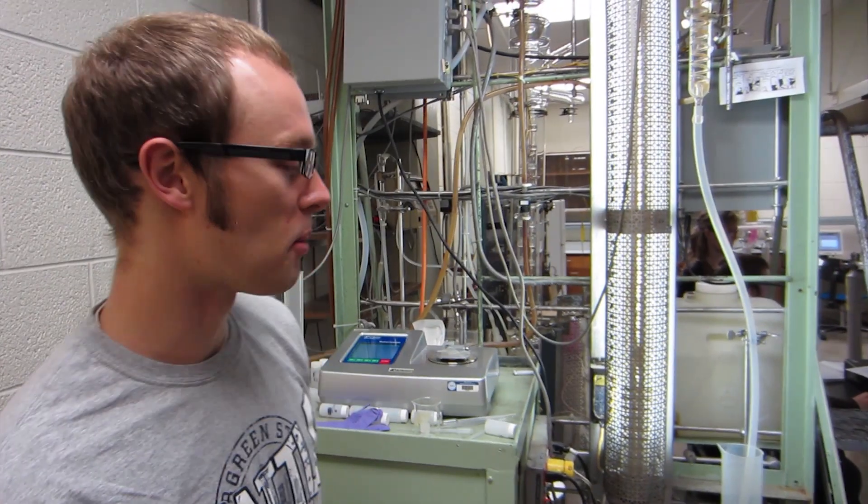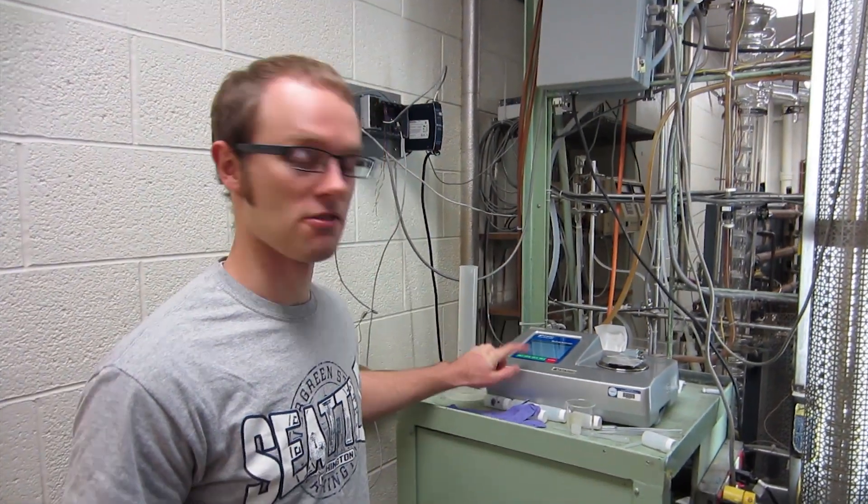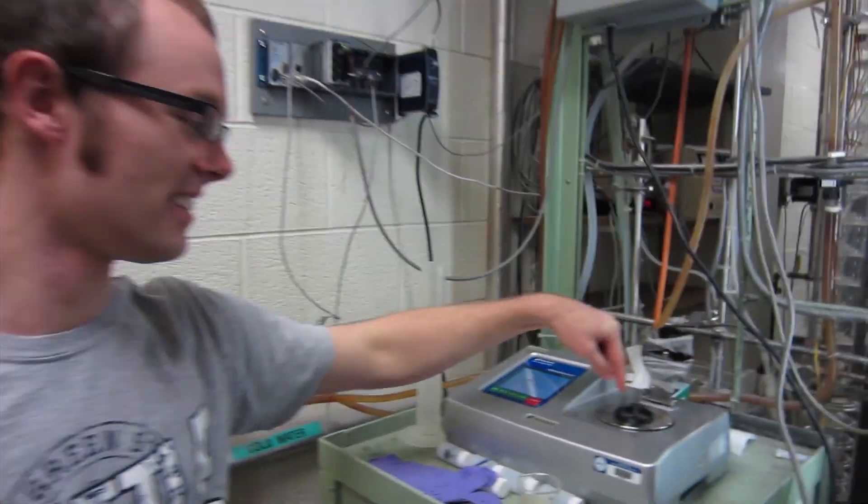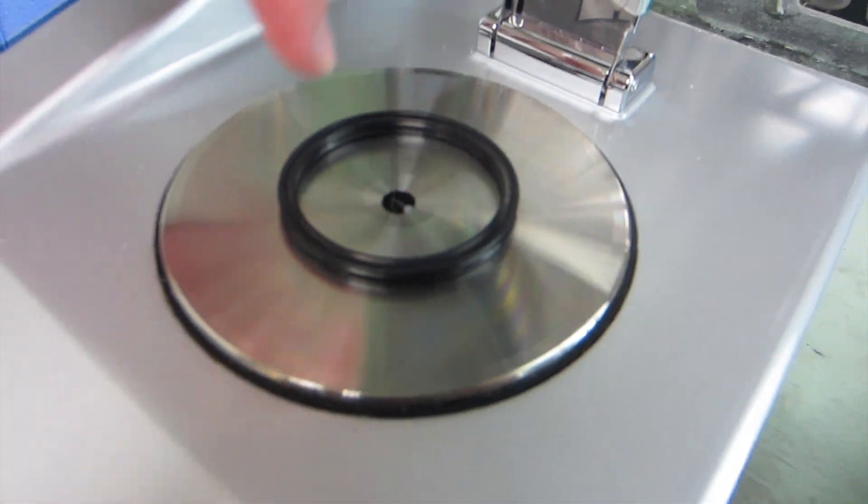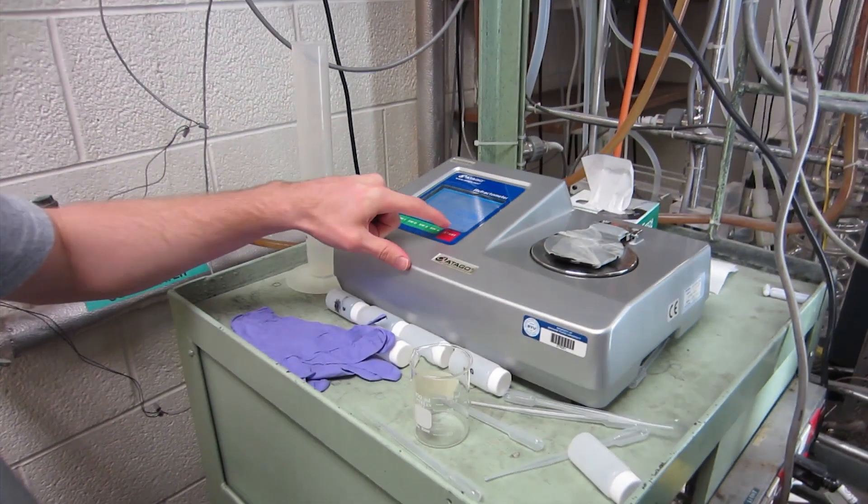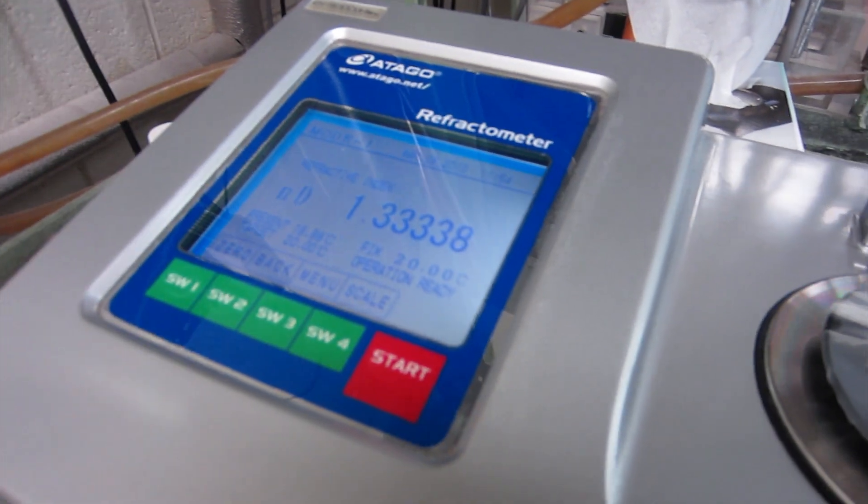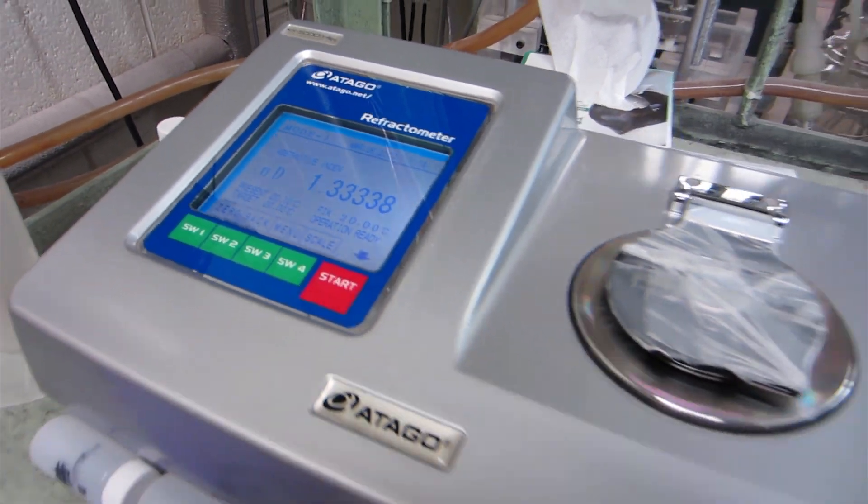To take a data point, we're going to use this refractometer. You put a little bit of sample right here. Close that and push start, and you'll get a value around 1.3. Then you use a correlation that's on the site to get your concentration of methanol inside your distillate.